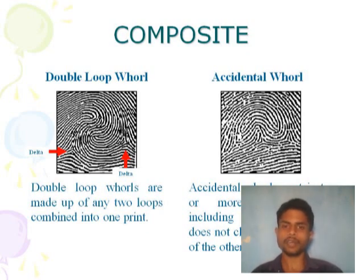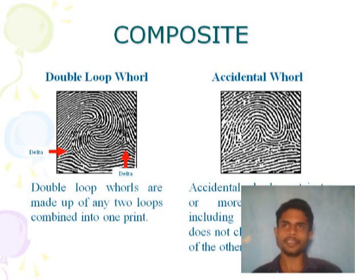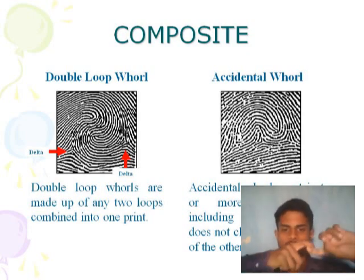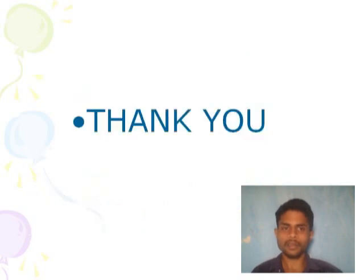In the lateral pocket loop, there is no small inner loop; the loop and both exits go in one direction, which is why we call it a lateral pocket loop. In the twin loop, both flows go in opposite directions — two loops enter going in opposite directions with one hook. After that, the accidental pattern can contain more than two patterns. Thank you.